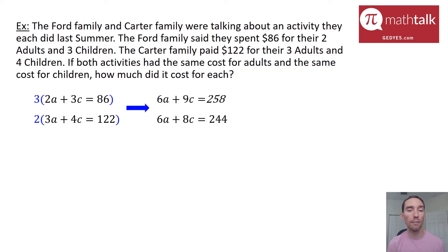So when I do that, I get on my top equation 6A plus 9C equals 258. And on the bottom, I get 6A plus 8C equals 244. Now my A's are the same, six and six. I can go ahead and subtract those two because that would eliminate it. 6A minus 6A is going to be nothing. And so 9C minus 8C is going to get me 1C or just plain old C. And 258 minus 244 is going to get me 14. So I know that C is 14.